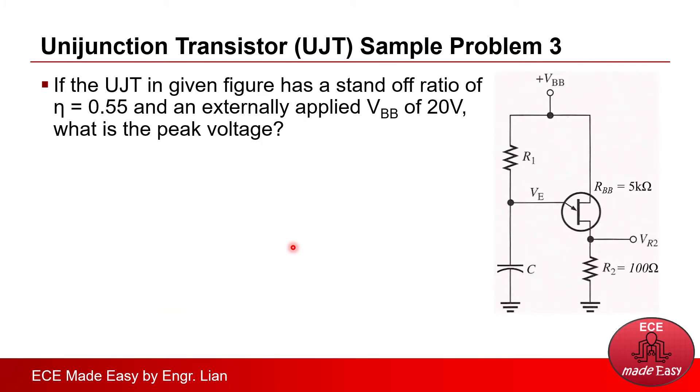Okay, let's proceed to sample problem number 3. If the UJT in the given figure has a standoff ratio of 0.55 and an externally applied voltage of 20 volts, what is the peak voltage? And this is the equivalent circuit that was given.